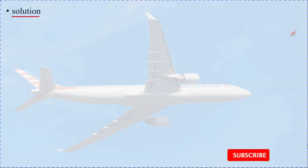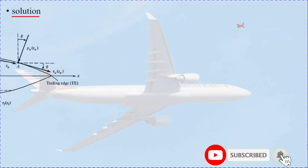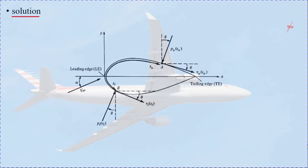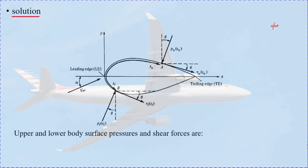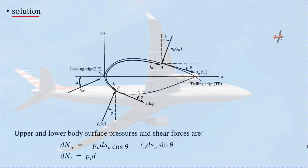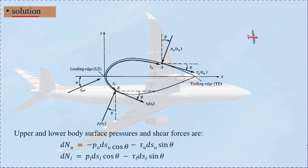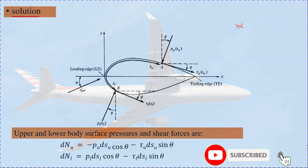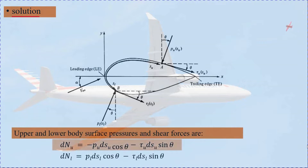The normal force on the upper body surface due to pressure and shear force is: dN_U equals minus P_U dS_U cos theta minus tau_U dS_U sin theta. This normal force is due to the pressure and shear stress on the surface of the airfoil. The lower body surface normal force is: dN_L equals minus P_L dS_L cos theta minus tau_L dS_L sin theta.